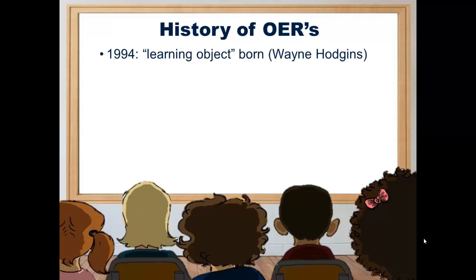I wanted to share a brief history of Open Educational Resources to give you context for why they exist and how you may want to use them. In 1994, Wayne Hodgins coined the phrase 'learning object' as a standalone learning activity or material that could be used in a variety of educational settings. A learning object is a self-contained unit that can be moved around, and you can piece together learning objects from various resources to create a lesson or learning experience.